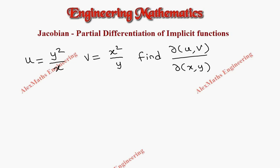Hi students, this is Alex. In this video we are going to find the value of ∂(u,v)/∂(x,y) using the Jacobian method. u is given as y² divided by x, and v is x² divided by y.